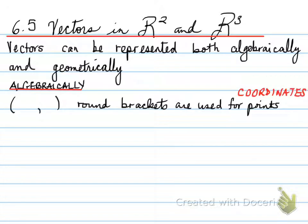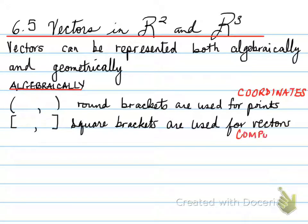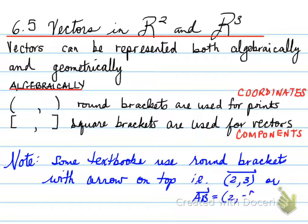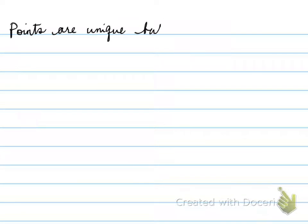Points, we use round brackets to represent coordinates. Now, vectors, we use square brackets, and these square brackets represent the components of a vector. Knowing this, we have to remember that sometimes textbooks use round brackets with arrows on the top, like such, or they write the letters AB and put a vector on top, and it looks like it equals a coordinate, but that's actually the components of it because of the way it's written.